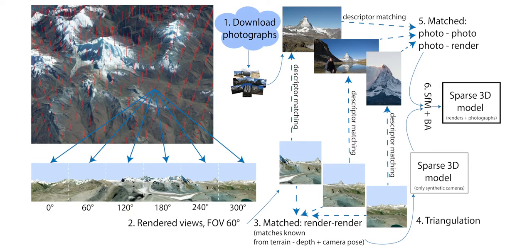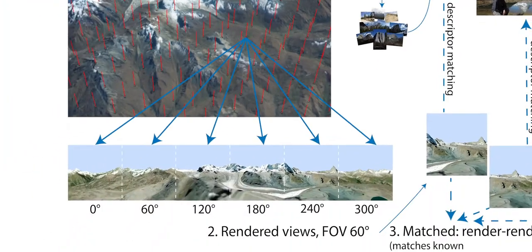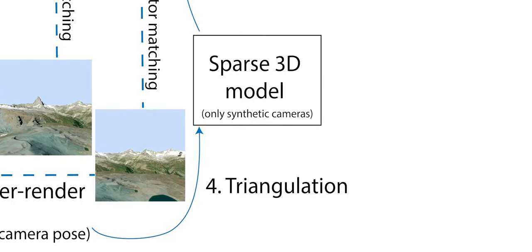We reconstruct several scenes, each consisting of a 10km radius region of interest. In the first step, for each scene we download ground-level images from an online service. In the second step, we render ground-level synthetic panorama images sampled on a regular grid. In the third step, we extract key points from the rendered images, and in the fourth step, we use the known terrain geometry to obtain a 3D point cloud from the rendered terrain.